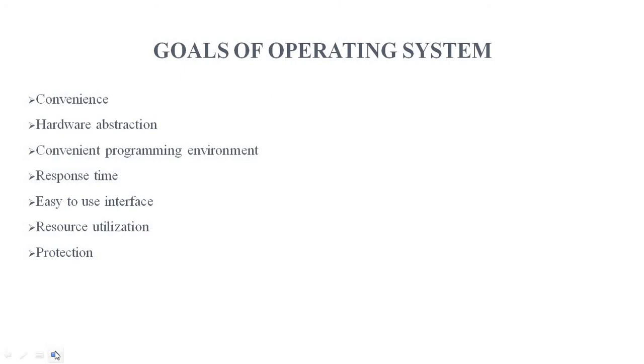The goals of operating system. First is convenience. The convenience of a user who performs a job using computer system is the prime goal of an operating system. Let us understand the user requirements. Like hardware abstraction. The user does not want to care about the hardware resources and to access these devices because the details of all hardware are too complex to work. Therefore, the operating system provides an abstraction layer between the user and hardware so that the user can work on the hardware without actually knowing it.